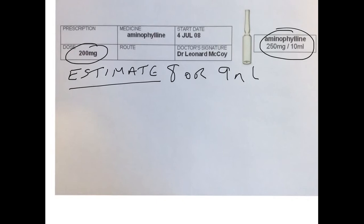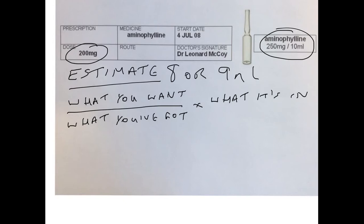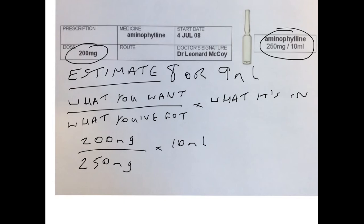So now we'll do the calculation. We use the formula: what you want over what you've got, times what it's in. What you want is 200mg, over what you've got which is 250mg, per 10ml. Doing this calculation gives an answer of 8ml of liquid.